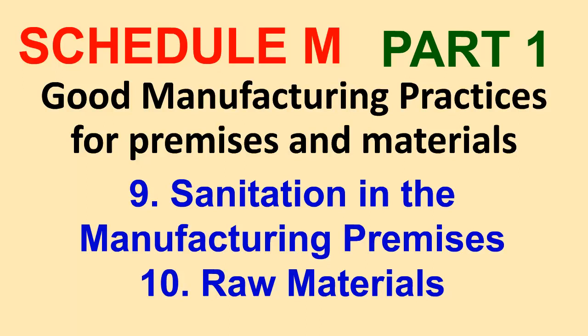Schedule M, Part 1: Good Manufacturing Practices for Premises and Materials. Section 9: Sanitation in the Manufacturing Premises.